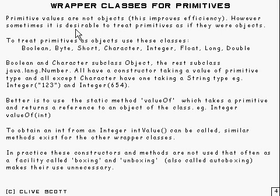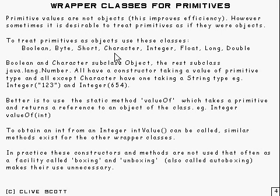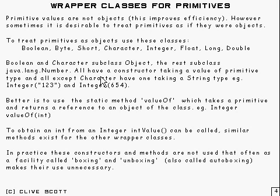However, sometimes — for things like the collection classes, which we'll come to eventually, and some other things — it's sometimes desirable to treat primitives as if they were objects. And in order to do that, there are these special classes available. As you can see, these are named pretty similar to the primitive types, apart from Character and Integer. These are called wrapper classes, and they just contain a single integer or a single character, or short or whatever it happens to be.